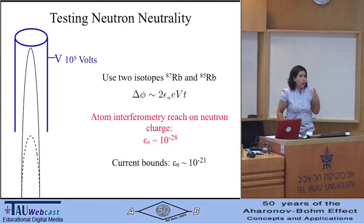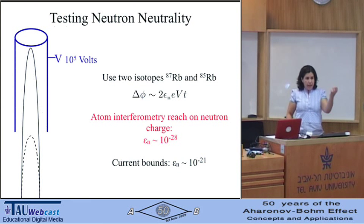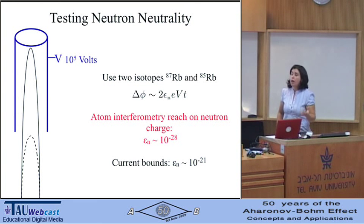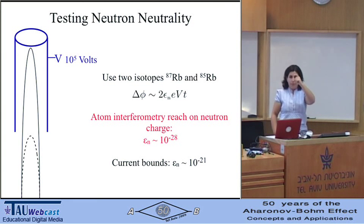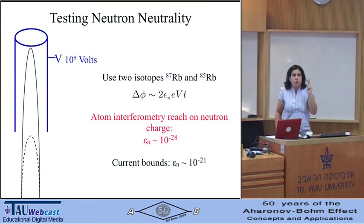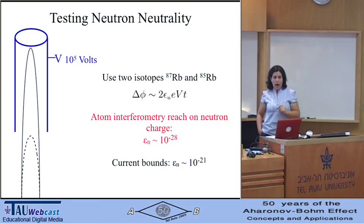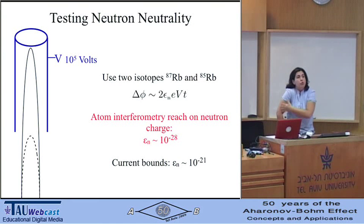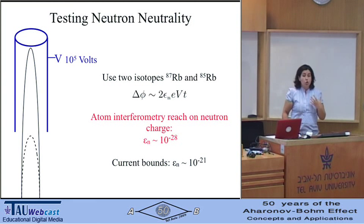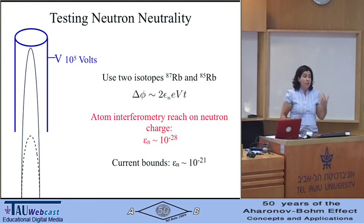For atom and neutron neutrality, all I have to do is take two isotopes — rubidium-87 and rubidium-85 — and launch them together. Since I subtract the phase shift between the two isotopes, the experiment will be sensitive to the charge of the two extra neutrons, which is the charge difference between the two isotopes. This experiment will be able to measure the neutron charge to an accuracy of one part in 10^28. Current bounds are several orders of magnitude above.